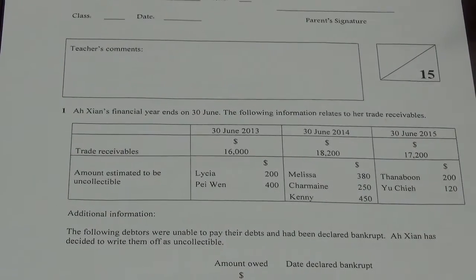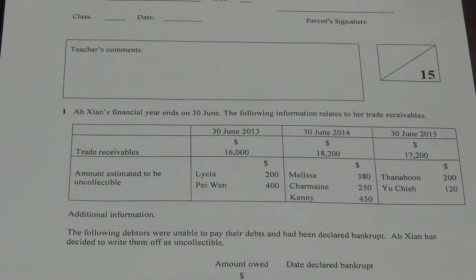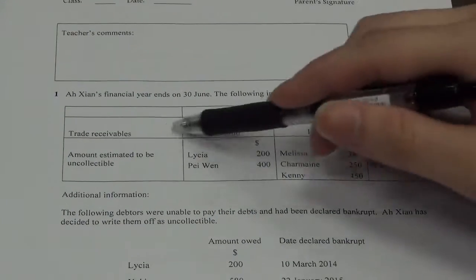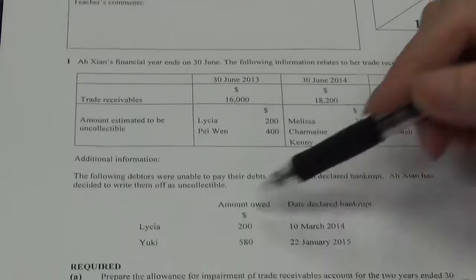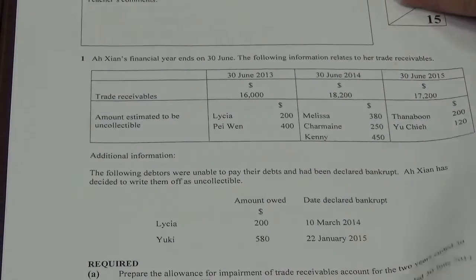First thing you need to remember is that we need to identify three types of information. One is trade receivables. Two, amount which may be uncollectable. Three, amount which is confirmed uncollectable. So, you are given trade receivables, may be uncollectable, and confirmed uncollectable. Using this information, you are supposed to craft the working.